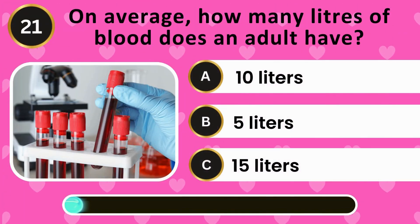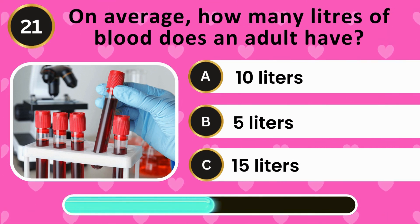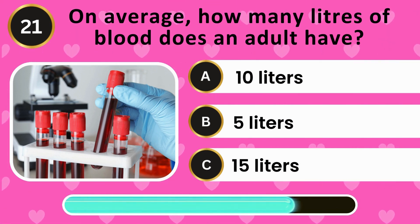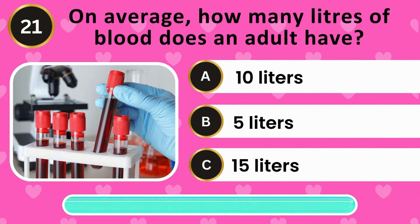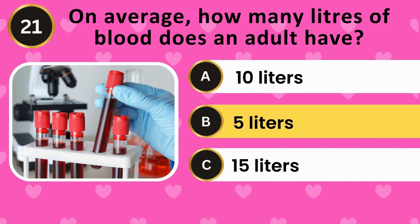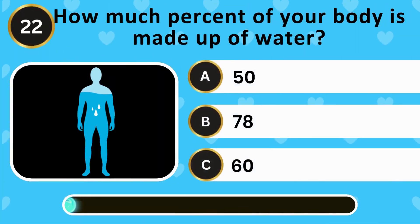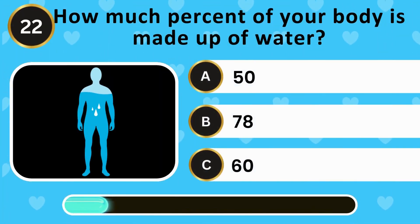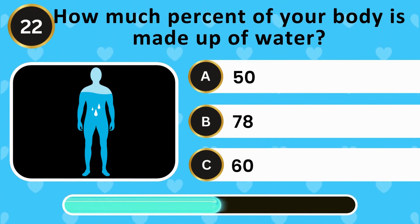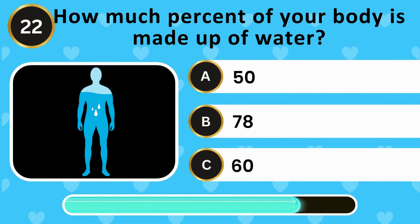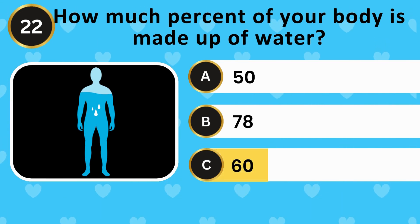On average, how many liters of blood does an adult have? 10 liters, 5 liters, 15 liters. The answer is 5 liters. How much percentage of your body is made up of water? 50%, 78%, 60%. The answer is 60%.